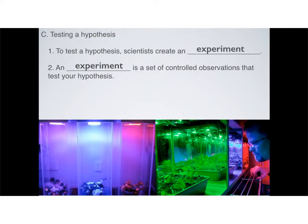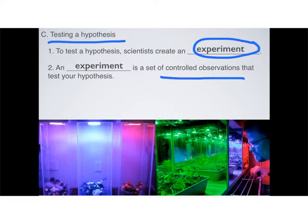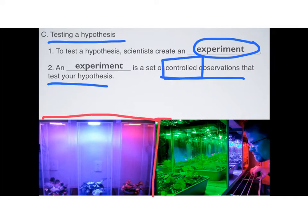Now let's move on to our third step in the scientific method, which is testing a hypothesis. Well, how do you test it? You test it by doing an experiment. What is an experiment? It's a set of controlled observations that test your hypothesis. And the key word there is the word controlled. The pictures that you see at the bottom here are of an experiment to see which type of light grows certain types of plants the best.